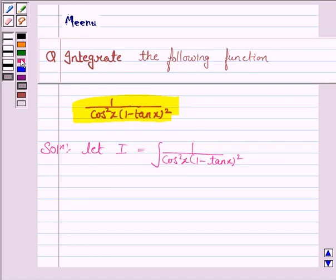Now, we know that 1 upon cos x is secant x. So, 1 upon cos square x is secant square x. So, this integral can be written as secant square x upon 1 minus tan x whole square dx. Here also we need to write dx.